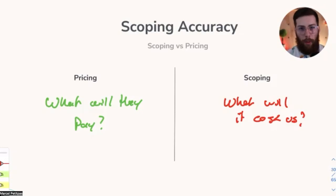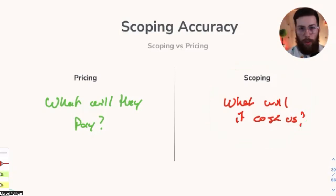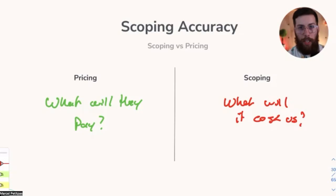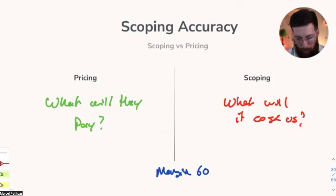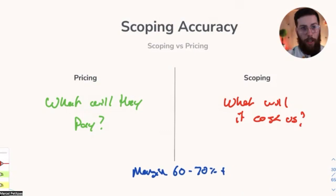What I'm proposing is that we create separation between these two things: honestly scope just for ourselves, don't show it to the client, and set realistic internal expectations. Then go to the pricing exercise and let it stand alone. Sometimes that means we discount or don't hit the margin we want — but ultimately both exist as separate exercises that come together. When they do come together, we're targeting a margin of 60% to 70% or more at the project level.